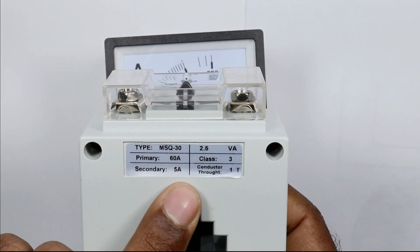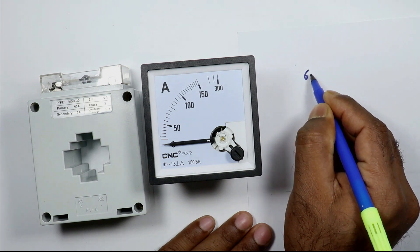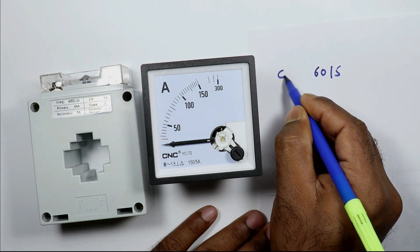Primary 60 ampere, secondary 5 ampere. Ratio is 60 by 5. This ratio is for CT.